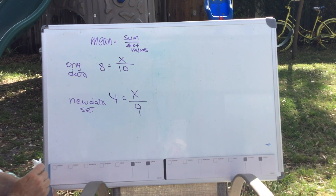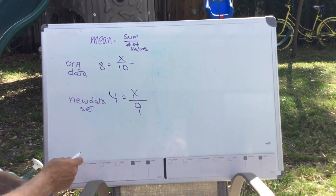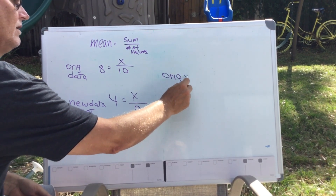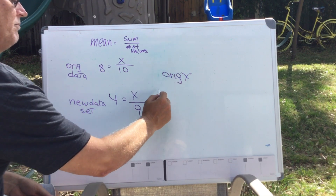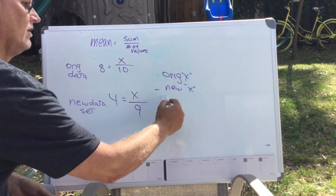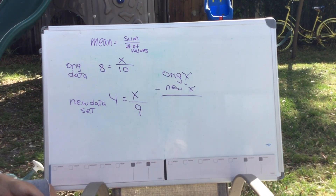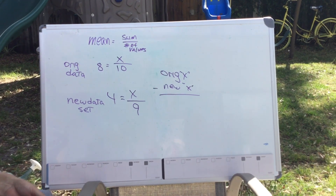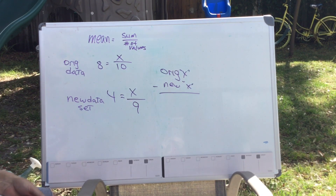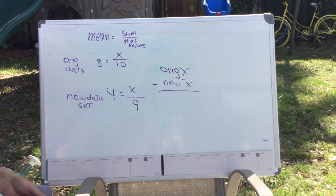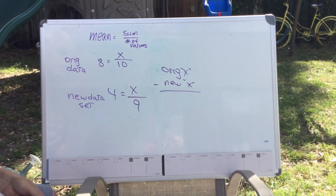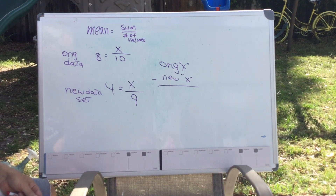Once you find the original sum and the new sum, you're going to subtract those two numbers: original sum minus new sum gives us the number that was eliminated from the data set. I'm not going to do the math for you — I'll let you do that — but that will give you your answer. Thank you.